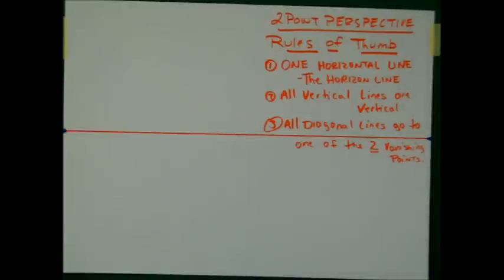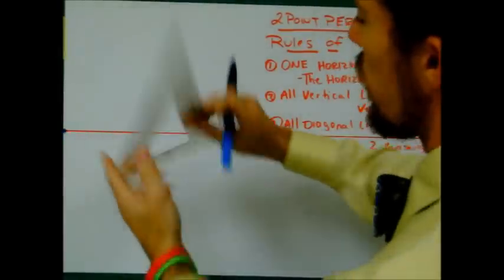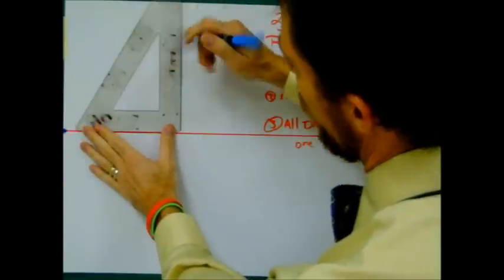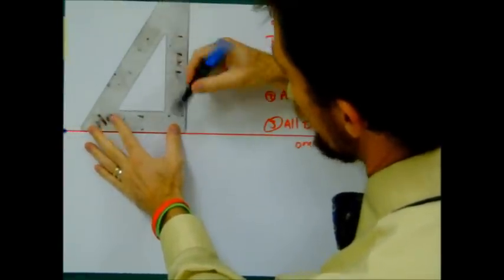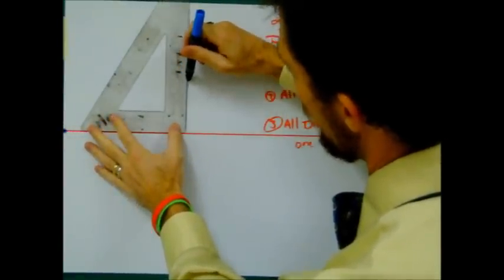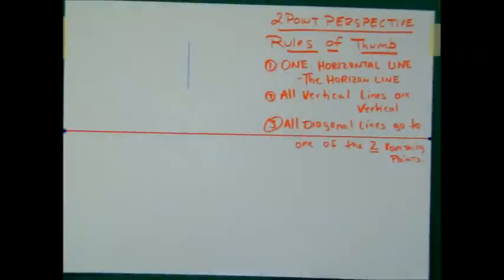We're going to start with a vertical line above our horizon line. So somewhere above your horizon line, we're going to draw in a vertical line. Now the closer you put it to the edge of your paper, the sharper your vanishing is going to happen — it's going to go back really fast. So we're going to start with one vertical line.